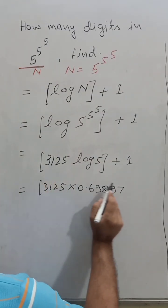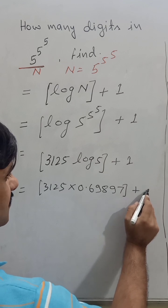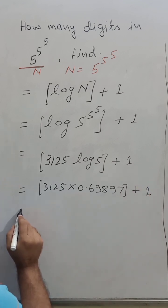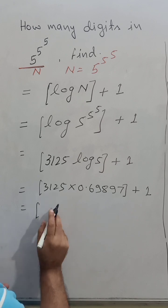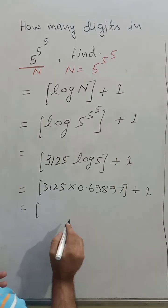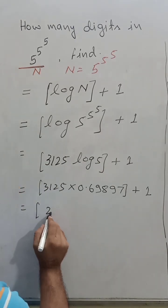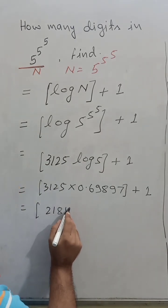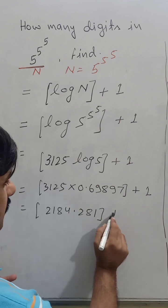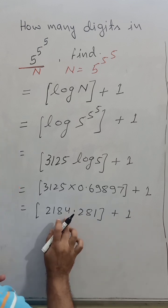So, the GIF, add plus 1. The multiplication - I have done by calculator - is 2184.281, GIF, plus 1.